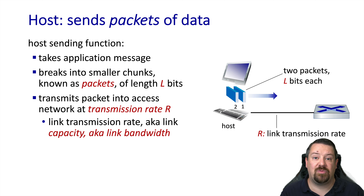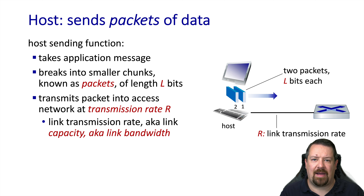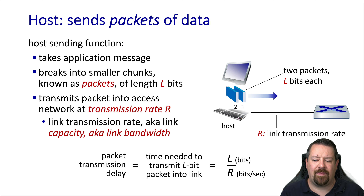Hosts break data into packets in order to send it. This data comes from applications, and it takes messages and breaks them into chunks of the right size to send over the network. We'll call the length of these packets L. The packets are transmitted onto the access network at rate R, which corresponds to the bandwidth of the link. We can find how long it takes to transmit a given packet by dividing L by R. This gives us the packet transmission delay, which is one of four components of delay incurred by a packet as it traverses the network.